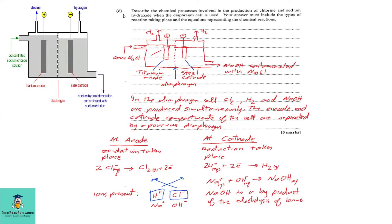Part d: Describe the chemical processes involved in the production of chlorine and sodium hydroxide when the diaphragm cell is used. Your answer must include the types of reaction taking place and the equations representing the chemical reactions. This question is worth five marks. Although no diagram was asked for, it is best to use a diagram to illustrate the reactions.